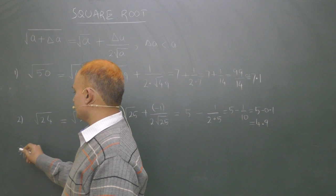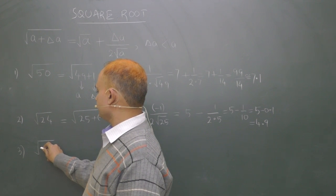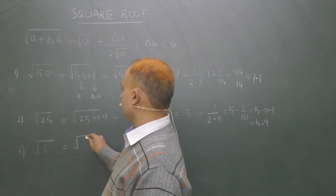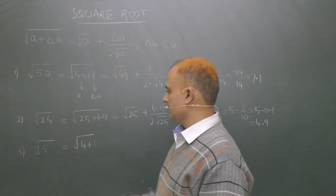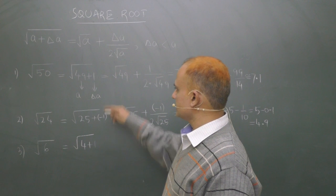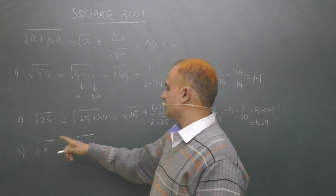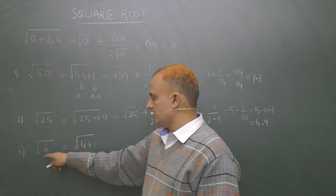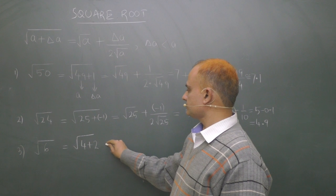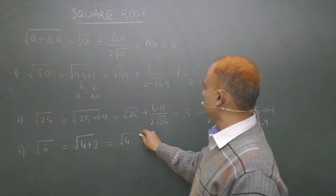Similarly let us consider another example. For example we have square root of 5, you can write root over 4 plus 1, or you may consider 6 because in all the cases surprisingly we are seeing delta A is either 1 or minus 1. So let us change it. Suppose we are willing to find square root of 6. We can write this square root of 6 as square root of 4 plus 2 which we shall split using this formula.